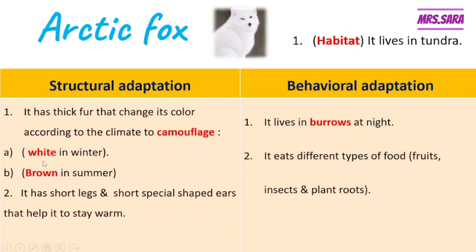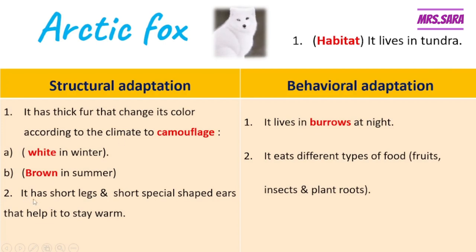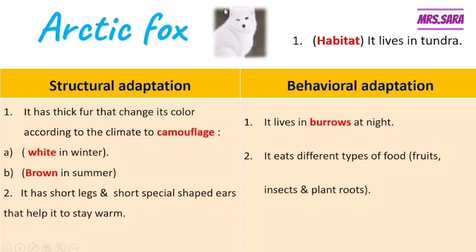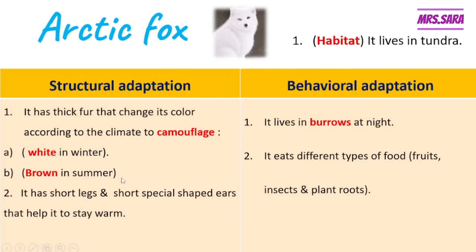So in winter the fur color is white, and in summer the fur color is brown — to camouflage with the change of the tundra climate. The arctic fox also has short legs and short special-shaped ears to help it stay warm in winter. This is the structural adaptation of the arctic fox to adapt to its surroundings.